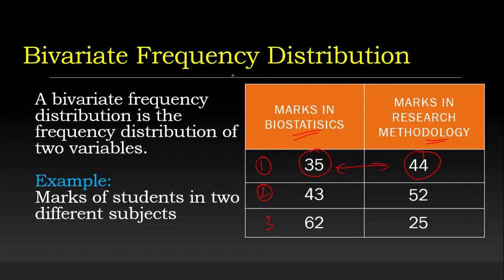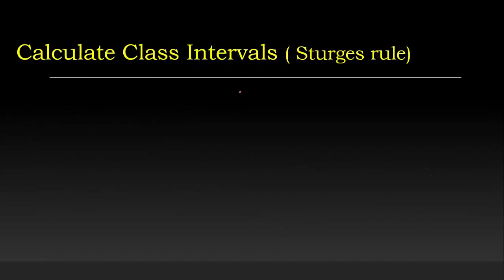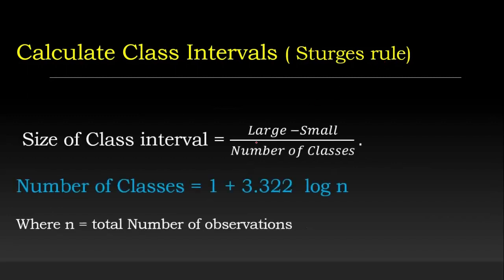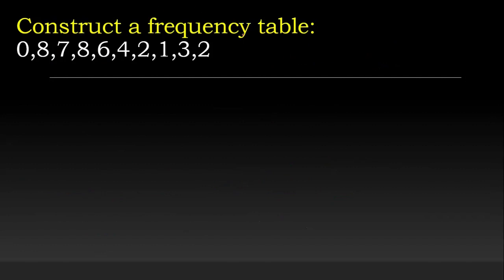To calculate the class interval, we use Sturges' rule. The size of a class interval is: larger number minus smaller number, divided by number of classes. The number of classes is calculated using the formula: 1 plus 3.322 times log N, where N is the total number of observations.